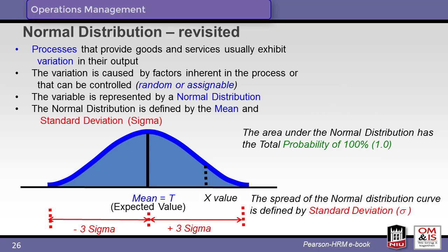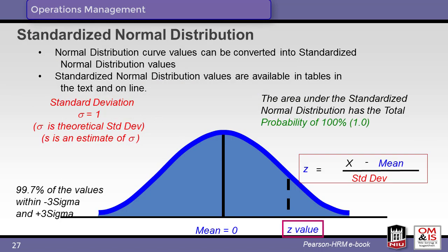This slide on the normal distribution is a review. We know that most processes exhibit some level of variation, and that variation may be due to typical variation found in the world or due to a specific assignable cause. The curve shown depicts the distribution of events based on the normal distribution and is defined by the mean or expected value and the standard deviation. The standardized normal distribution is used to analyze processes. We note that 99.7% of the values fall within the range of plus or minus 3 sigma. The z-value calculation tells us the probability of a certain value x given a normal distribution defined by its mean and standard deviation.